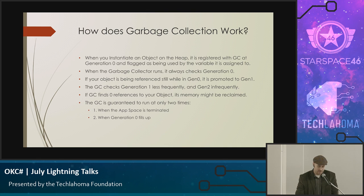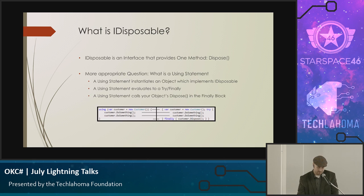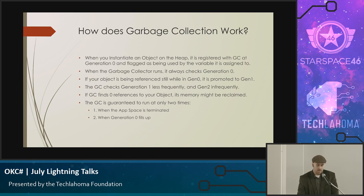Once it finds there are no more references to an object, it marks it ready for cleanup and then cleans it up. There are only two times that garbage collection for sure actually runs and collects: one is when your application closes, at which point it checks all generations — zero, one, and two — and makes sure it cleans everything up. The other is when generation zero fills up.